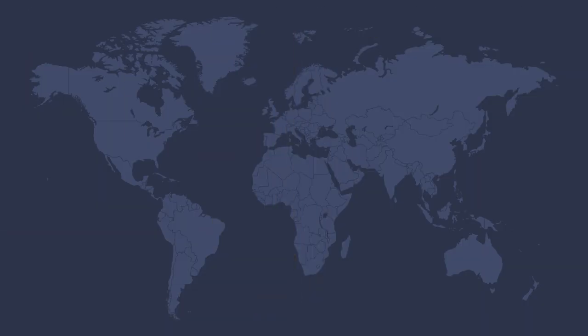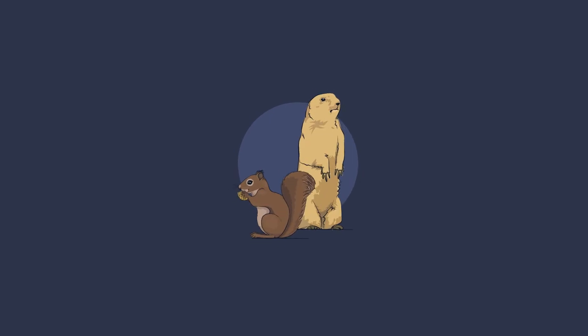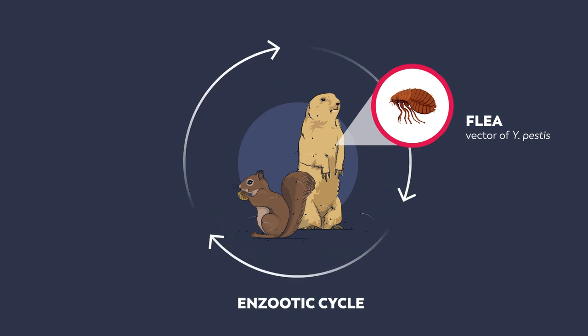Plague is endemic in parts of Africa, South America, and Central Asia, as well as the Western United States. Scientists believe that plague evolved on the high plains of Eurasia and has since become endemic in many areas worldwide. The natural hosts in the United States are ground rodents, primarily prairie dogs and certain squirrels. Fleas serve as the vector and transmit Y. pestis in an enzootic cycle among rodents in the wild.